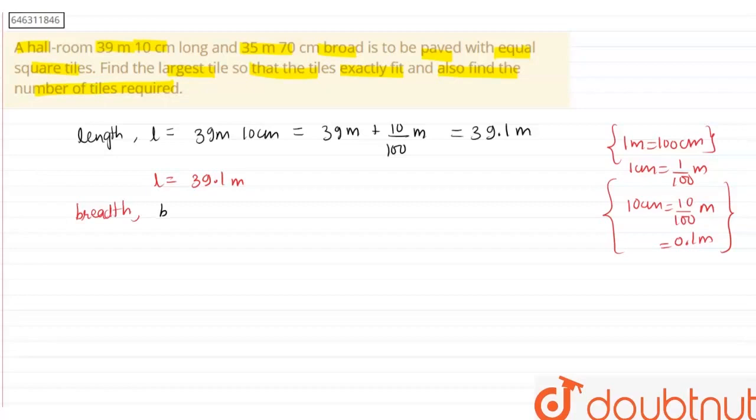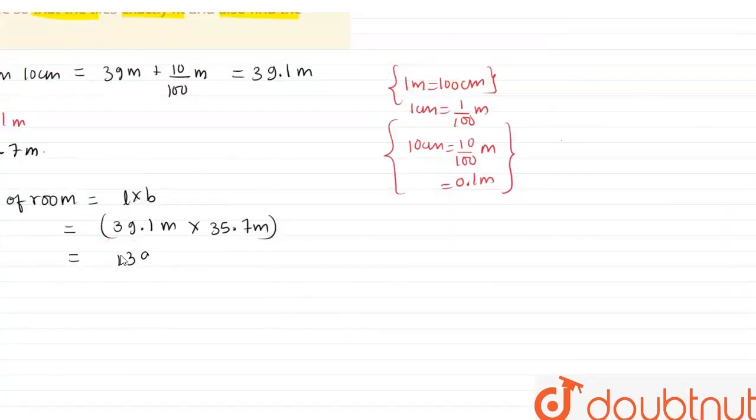The breadth turns out to be 35.7 meter, all right? So from here let us first find out the total area of the room. Total area of the room will be equals to L into B because it's a rectangle. So this will be 39.1 meter times 35.7 meter, so this will give 1395.87 meter square.